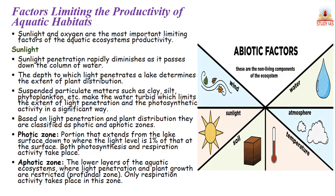The photic zone extends from the lake surface down to where the light level is only 1% of that at the surface. Both photosynthesis and respiration activity occur in the photic zone. The aphotic zone is where sunlight is not able to penetrate, and as a result, plant growth is restricted. In the aphotic zone, only respiration occurs, whereas in the photic zone, both photosynthesis and respiration take place.